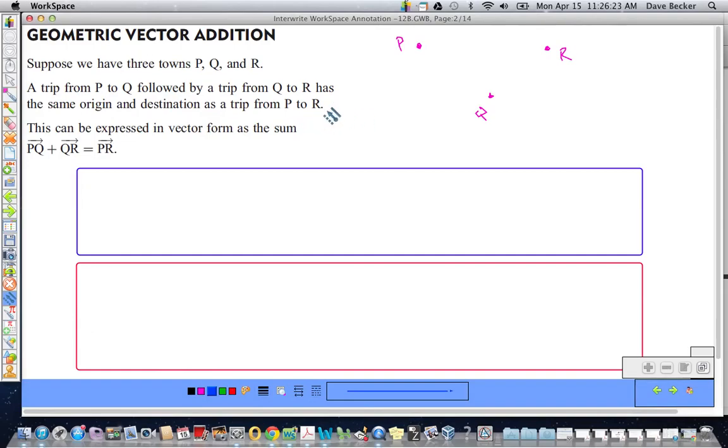So, a trip from P to Q, in vector form, that would look like this. And then from Q to R would look like that. And what we say using vectors is that's the exact same thing as a trip from P to R. That's an example of displacement.